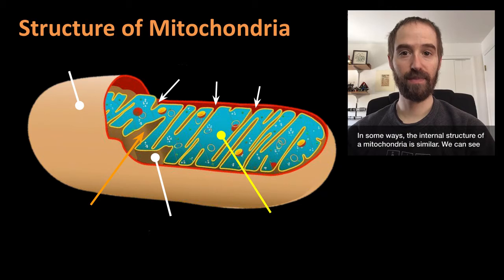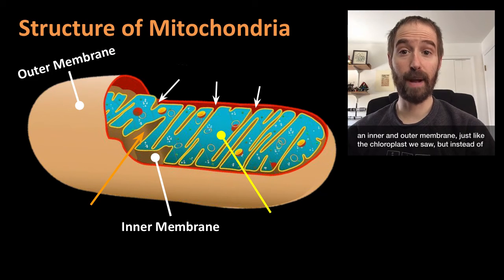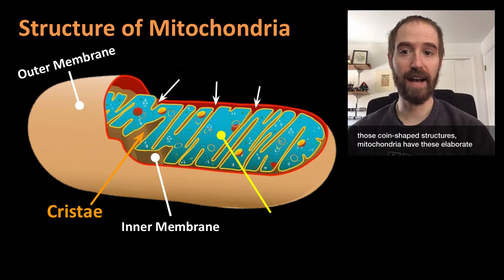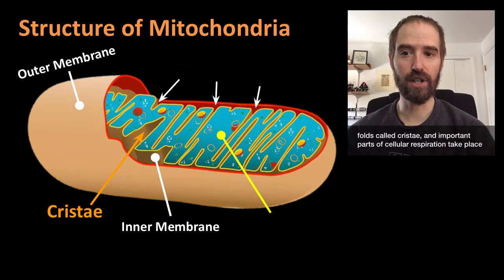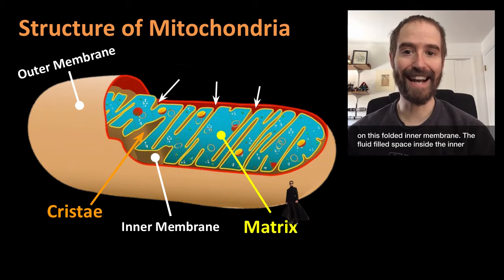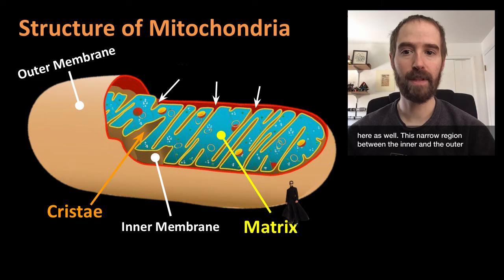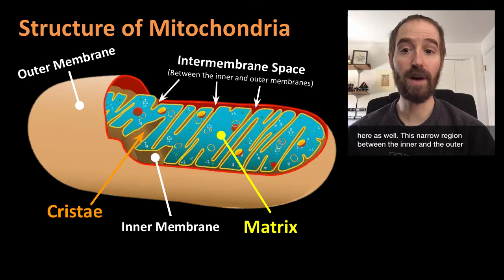In some ways, the internal structure of a mitochondria is similar. We can see an inner and an outer membrane, just like the chloroplast. But instead of those coin-shaped structures, mitochondria have these elaborate folds called cristae, and important parts of cellular respiration take place on this folded inner membrane. The fluid-filled space inside the inner membrane is called the matrix, and part of cellular respiration takes place here as well. This narrow region between the inner and the outer membrane is called the inter-membrane space.